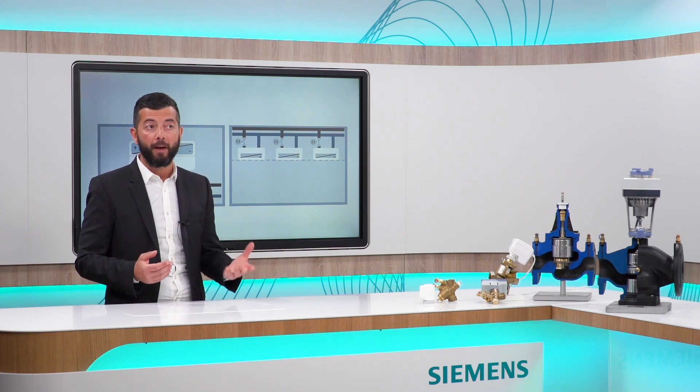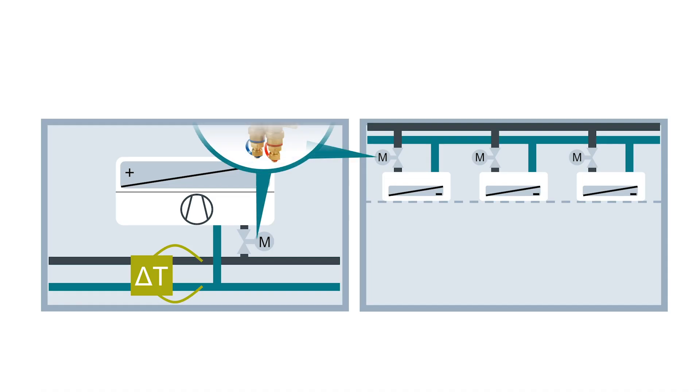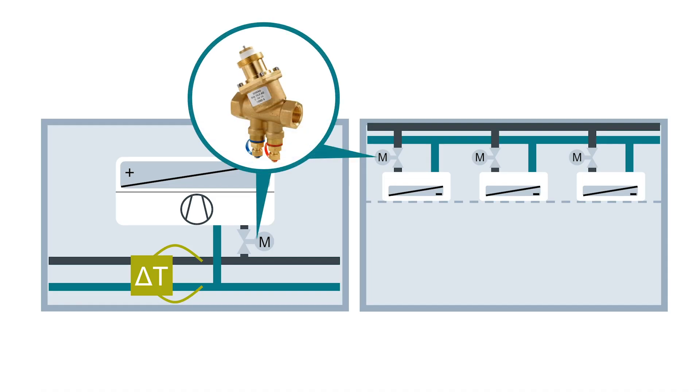But besides the differences between a chill beam and a fan coil unit, when it's about controlling these devices, it is always the best choice to use a dynamic valve with a modulating actuator, so that, as explained in the second episode of this series,